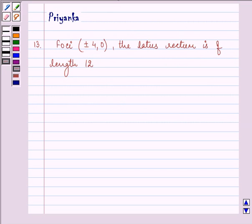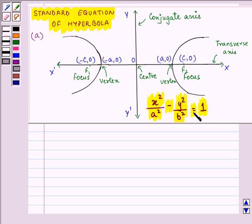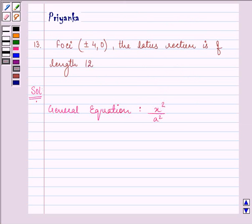Now here the foci lies on the x-axis, thus the general equation of hyperbola is x²/a² - y²/b² = 1.